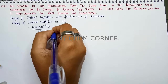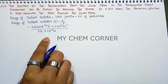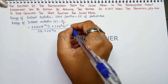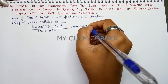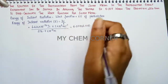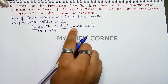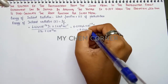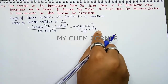Lambda is 256.7 nanometer, converted to meters: 256.7 × 10⁻⁹ meter, since one nanometer is 10⁻⁹ meter. So 6.626 × 3 divided by 256.7 gives 0.07746 × 10⁻¹⁷ joule. Shifting the decimal two places gives 7.746 × 10⁻¹⁹ joule.